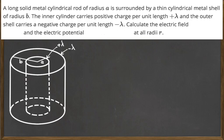To calculate the electric field we separate this problem into three regions. The first region is the inner region of the metal rod. Since we know that inside every metal the electric field is zero, we don't need to calculate it — E is equal to zero when r is less than a.